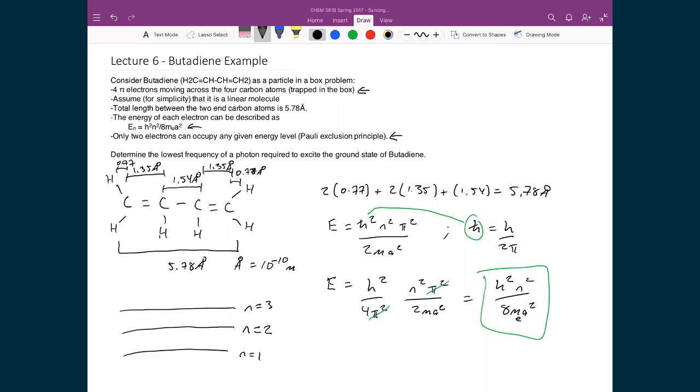And inside my butadiene, I have 4 pi electrons, so I can populate my energy levels. Here are 2 electrons sitting inside my n is equal to 1 energy level, and here are 2 electrons sitting in the n is equal to 2 energy level.